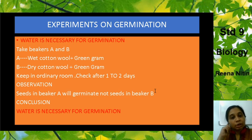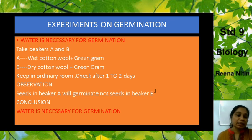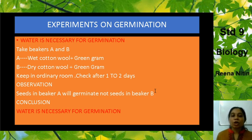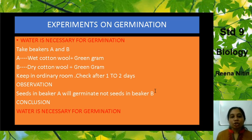Now there are experiments to demonstrate the factors required for germination. Experiment 1 proves that water is necessary. Take two beakers, A and B. In beaker A, place wet cotton wool with green gram seeds on top. In beaker B, place dry cotton wool with green gram seeds. Keep both in an ordinary room for one to two days. You will observe that beaker A — with wet cotton wool — will germinate, while beaker B will not. Conclusion: water is essential for germination.